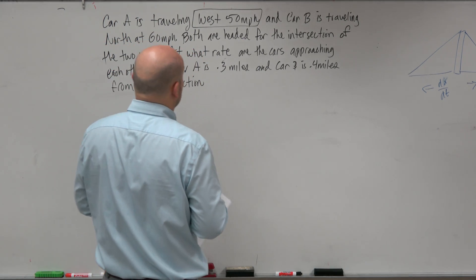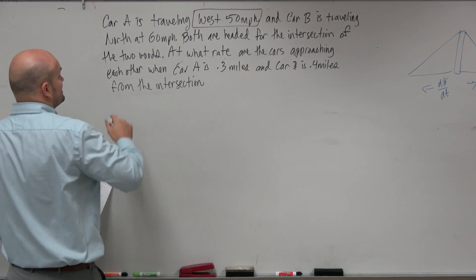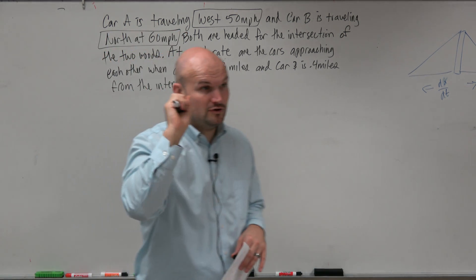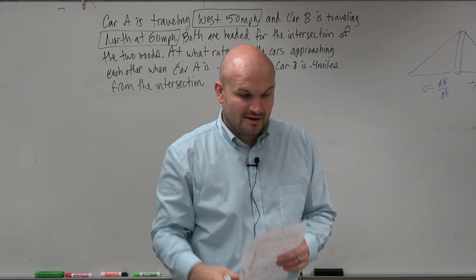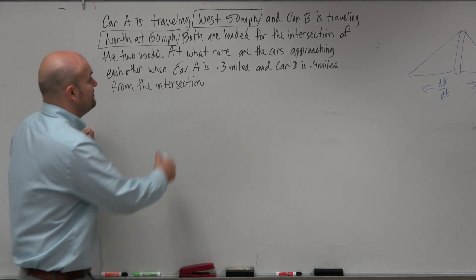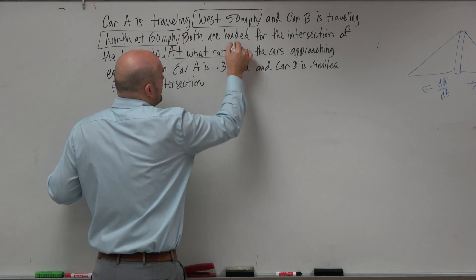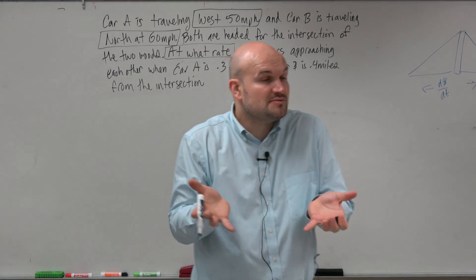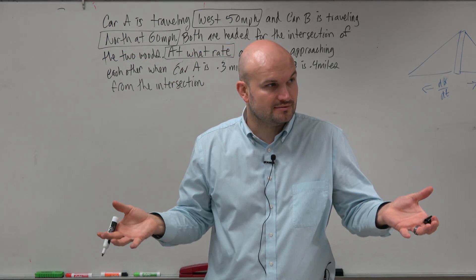Then car B is traveling north at 60 miles per hour. Now I have two rates, right? And what's even more important is they're asking you at what rate are the cars approaching each other. Therefore I need to have some sort of relationship of these cars.